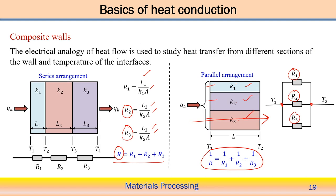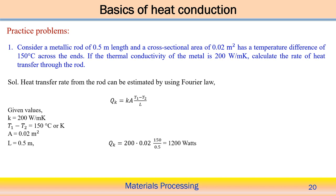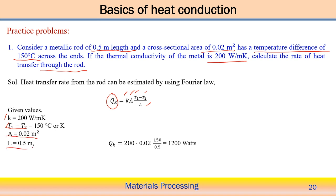Example: Consider a metallic rod of 0.5 meter length, cross-section area 0.02 meter squared, temperature difference 150 degrees centigrade across the ends, and thermal conductivity 200 W/(m·K). Calculate the rate of heat transfer. Applying Fourier's law: QK = K·A·(T1 minus T2)/L, with T1 minus T2 = 150°C, A = 0.02 m², and L = 0.5 m. The result is QK = 1200 watts.